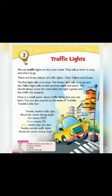Here's a small poem about traffic lights that you can learn. You can also sing this with the tune of Twinkle Twinkle Little Star: Twinkle twinkle traffic lights, round the corner shining bright. Red means stop, green means go, yellow means very very slow. Twinkle twinkle traffic lights, round the corner shining bright.